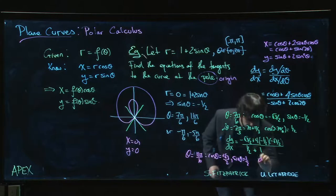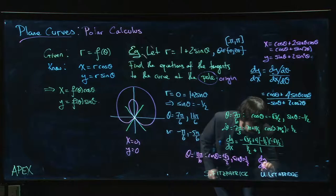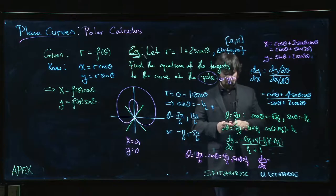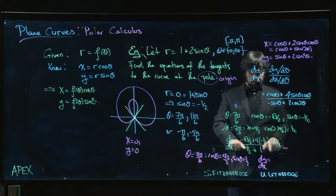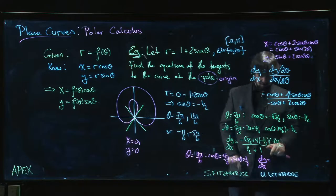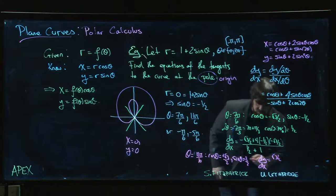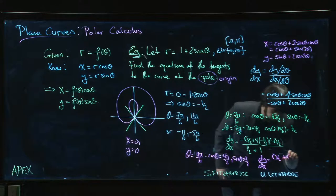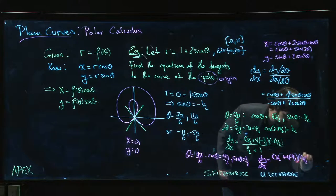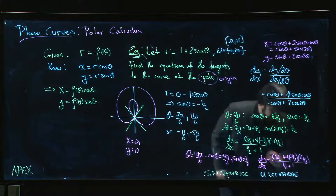and we get dy dx equal to, well, the only thing that's actually going to change are these two minus signs here. So we get root 3 over 2, and then we get 4 times minus 1 half times root 3 over 2. On the bottom, we have again, 1 half plus 1.